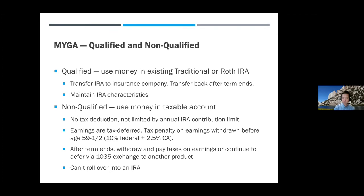Federal has a 10% penalty; California has a 2.5% penalty. When your term ends, you can decide to take the money out. If you're already 59½, you just pay taxes with no penalty. If you're under 59½, you can still pay the penalty — because the interest rate is higher — or you can roll it into another MYGA or another insurance product via a 1035 exchange, continuing the tax deferral. Regardless of how many times you roll over from one MYGA to another, it's still not an IRA and can never become one.